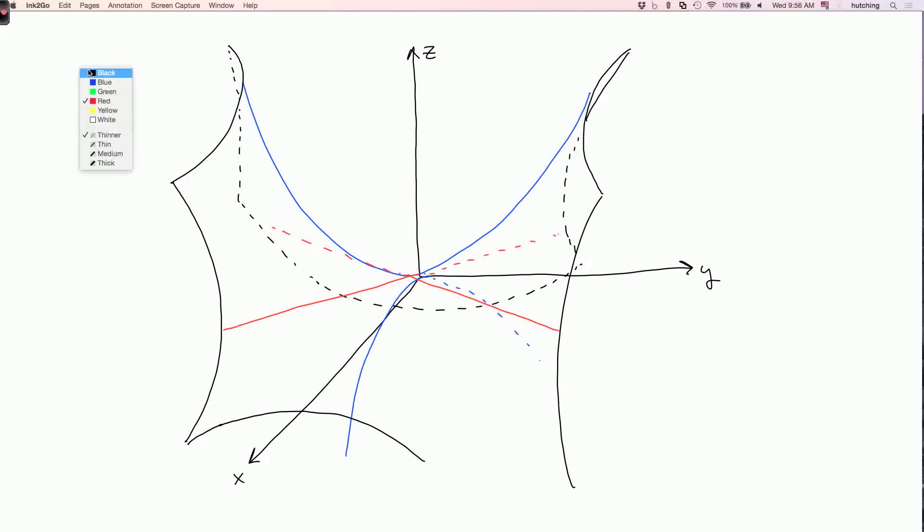So there's the sketch of the hyperbolic paraboloid. This is sometimes also called a saddle. You can imagine you're riding a horse. The horse is going in the y direction. And you're sitting on the saddle with your legs dangling off of the positive and negative x-axis.